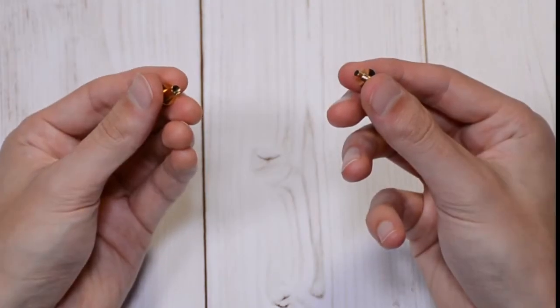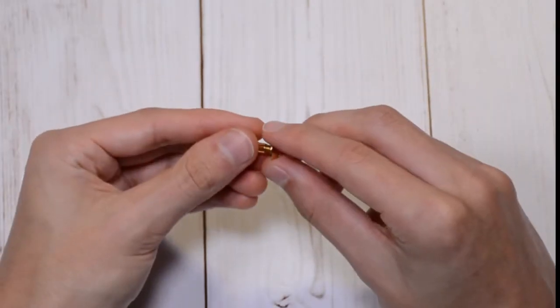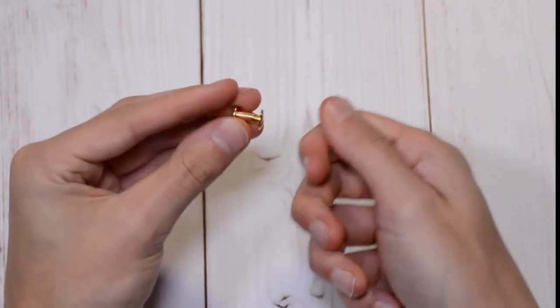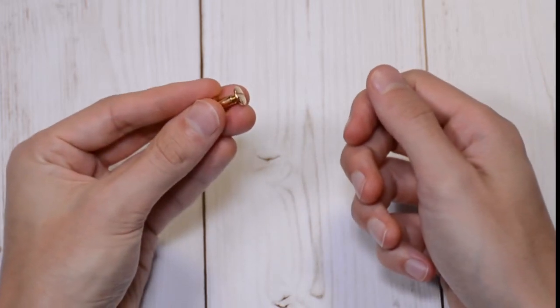The screws are manufactured from two parts, a male and female component, that simply twist together. Screws can be tightened by hand.